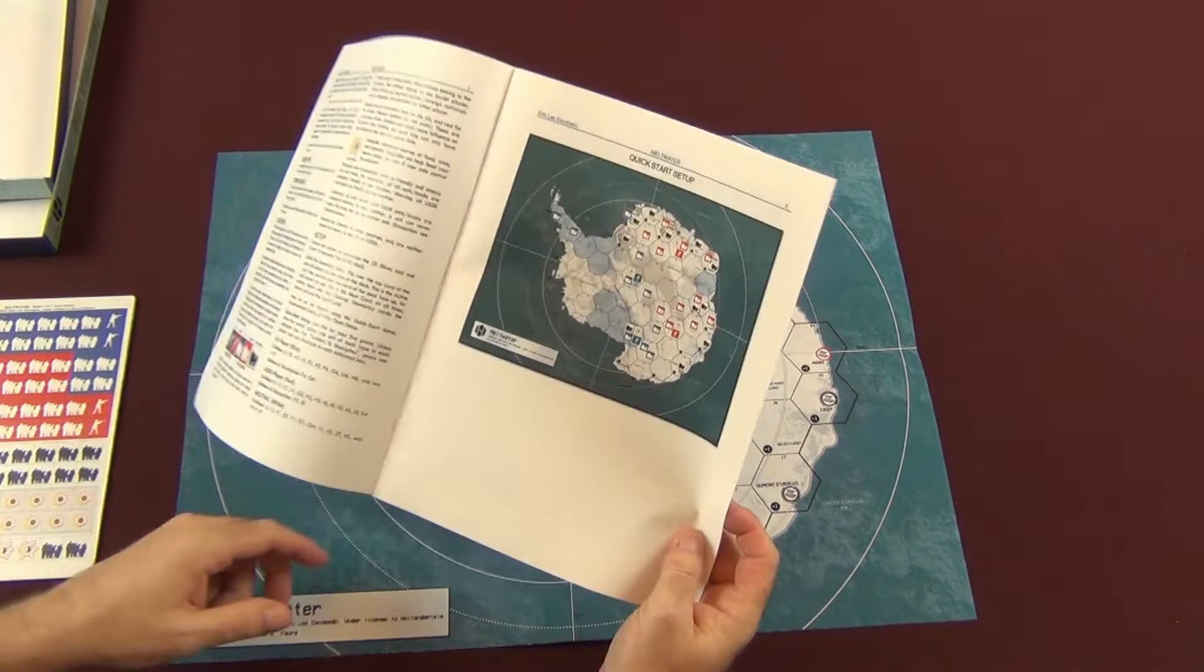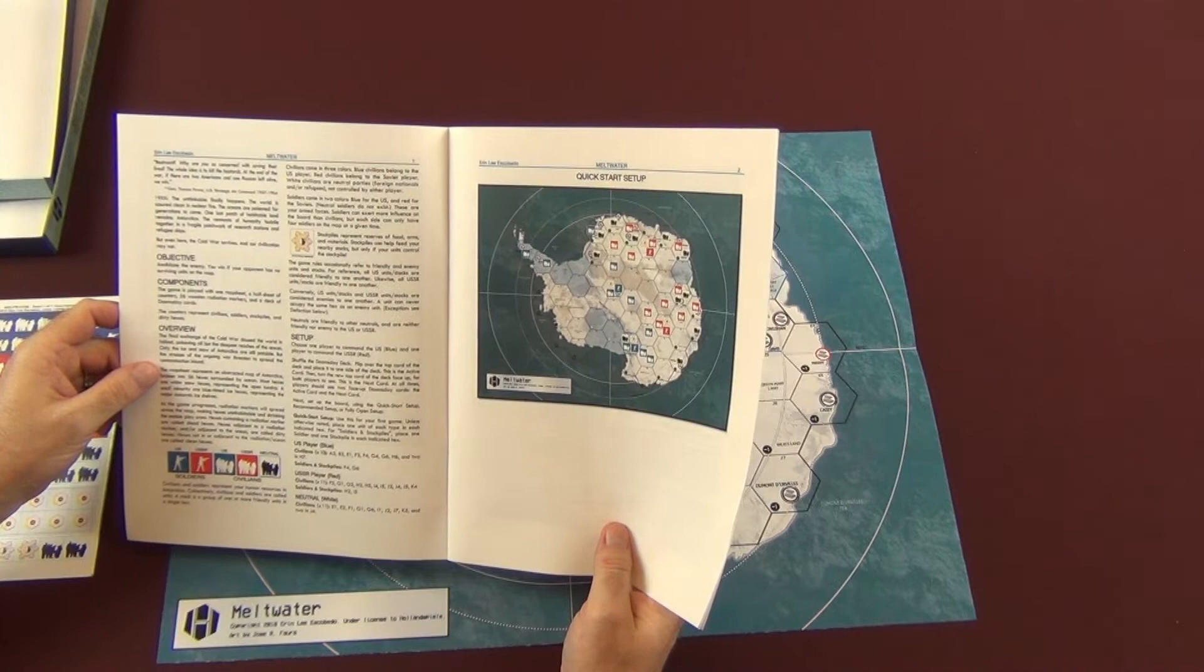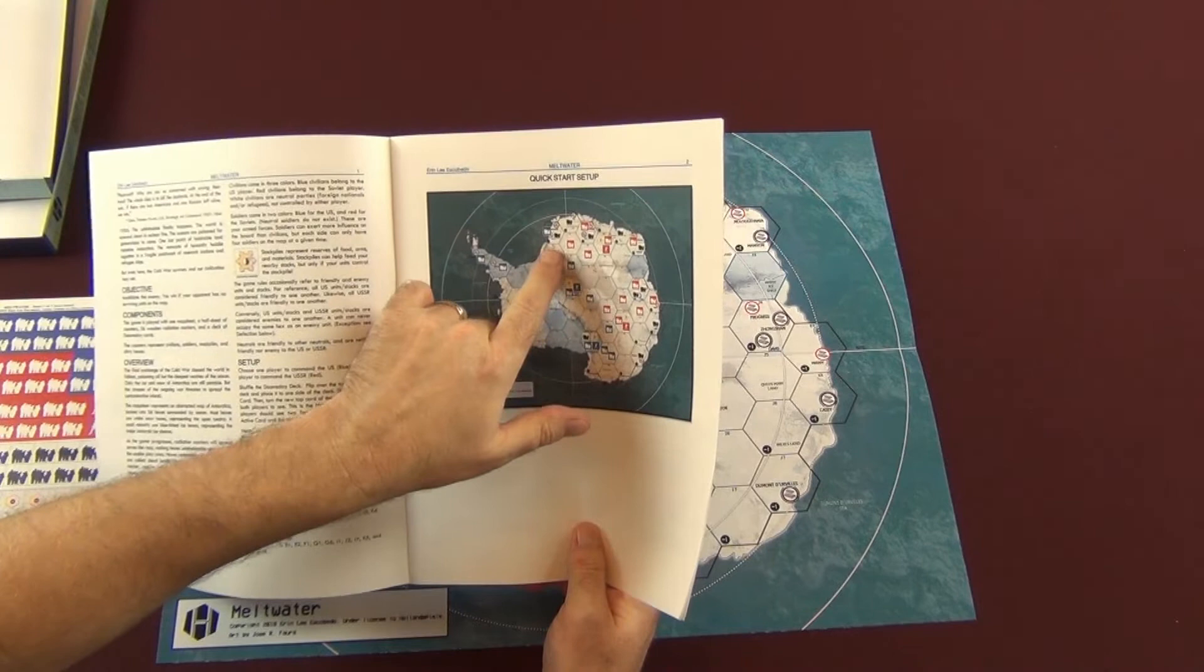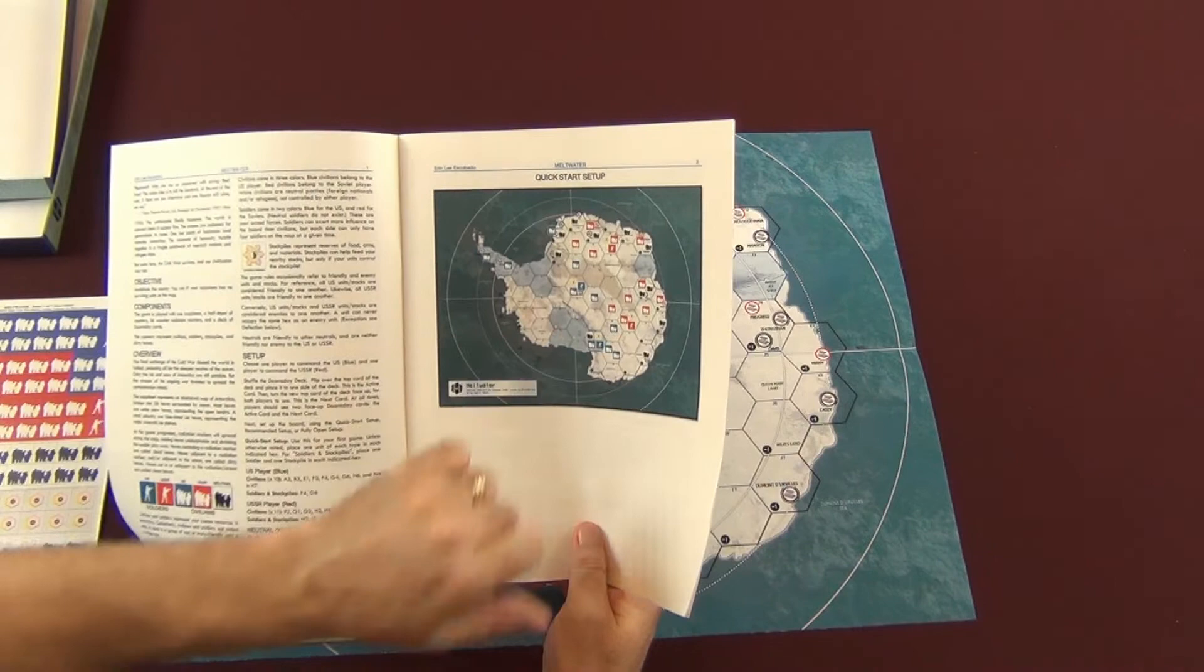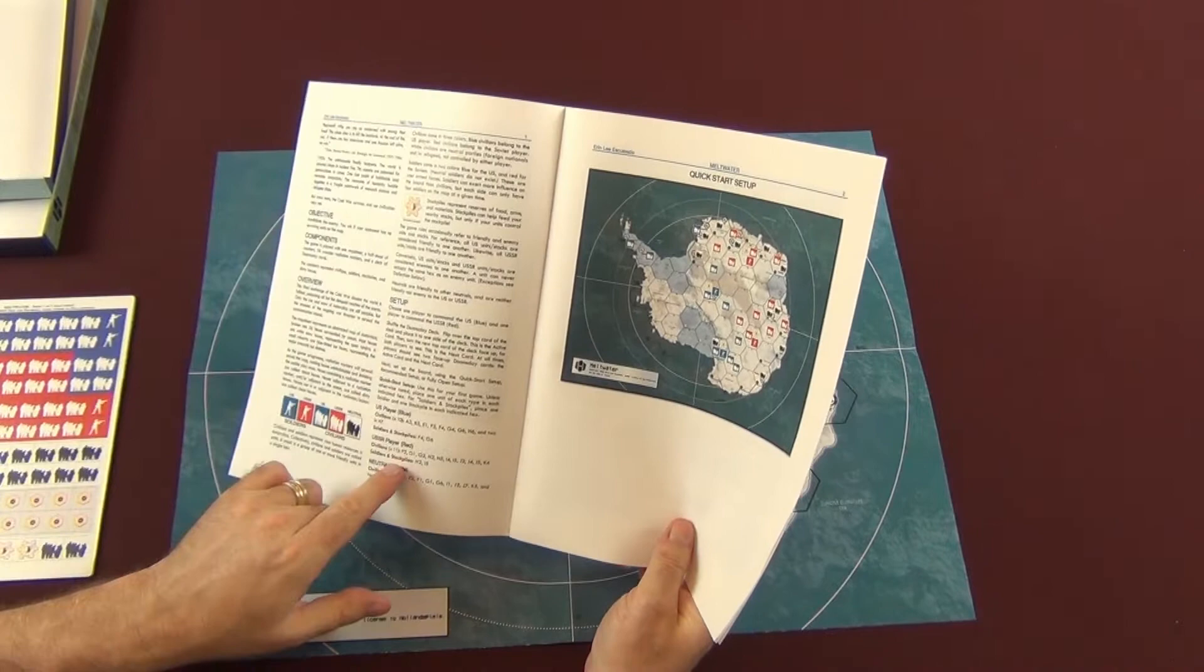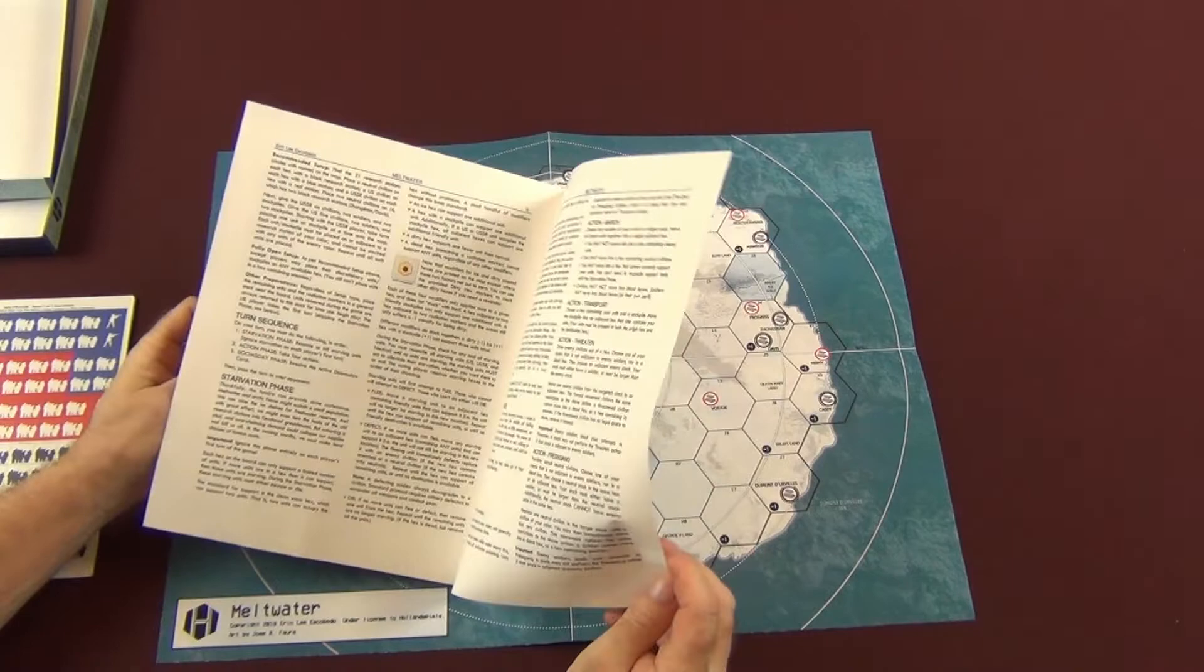As you are expanding out on the Antarctic area here and you're trying to wipe out your opponents, this is the quick start setup. It explains to you how each of your sides are going to set up, where all the counters go. It also has the listing here for the order of battle as far as how that's going to go in text, but nice to see it in visual format.